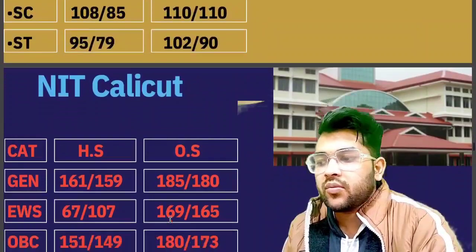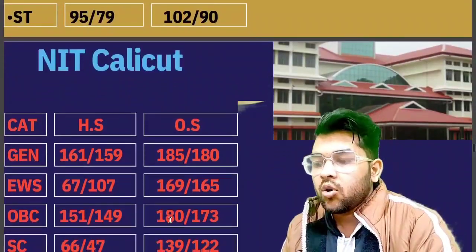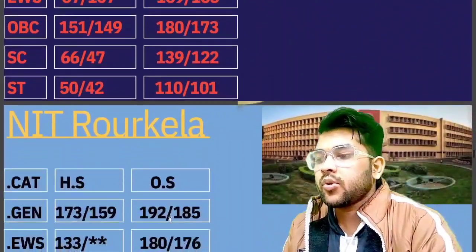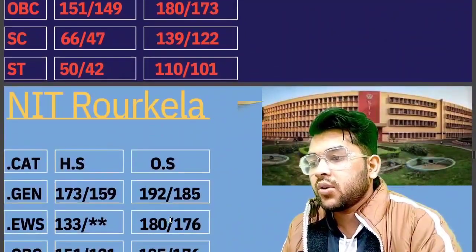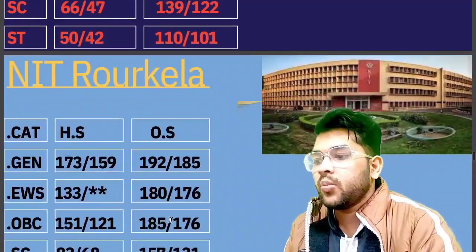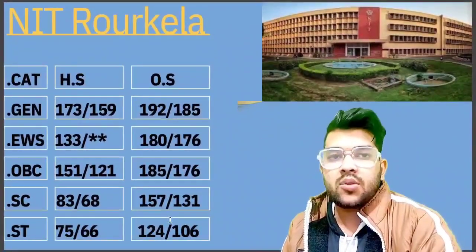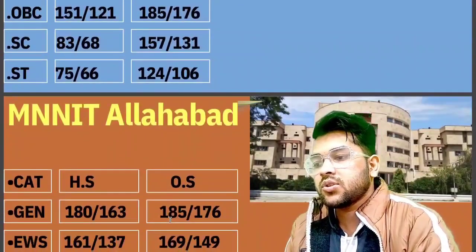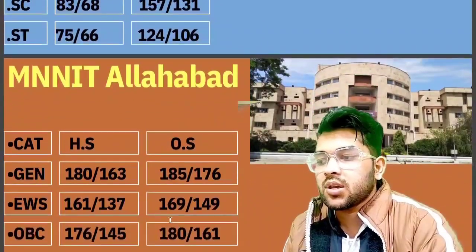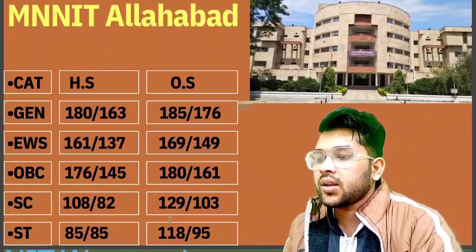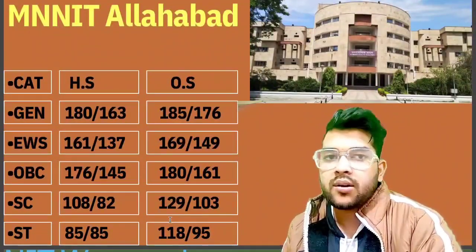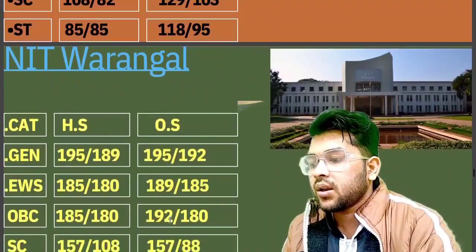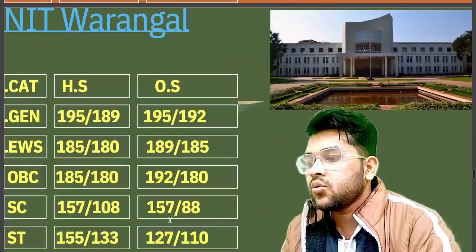For NIT Calicut: General 185, EWS 169, OBC 180, SC 139, ST 110 marks. For NIT Rourkela: General 192, EWS 180, OBC 185, SC 157, ST 124 marks. For NIT Allahabad: General 185, EWS 169, OBC 180, SC 129, ST 188 marks is required.